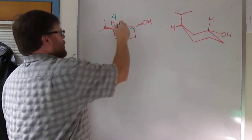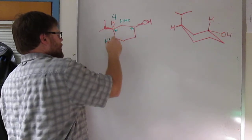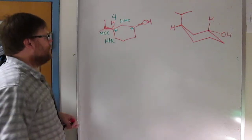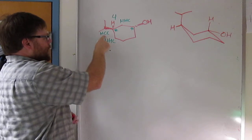So then what are they bonded to? H, H, C there. H, H, C there. And this one is bonded to H, C, C. H, H, C. H, H, C still tie. But H, C, C wins. So that's priority group one.